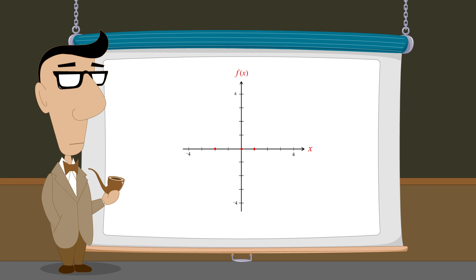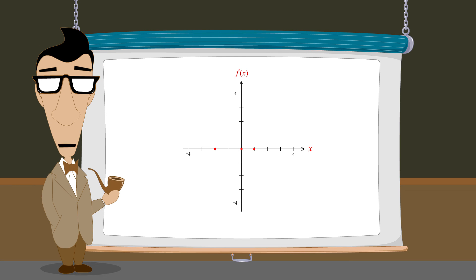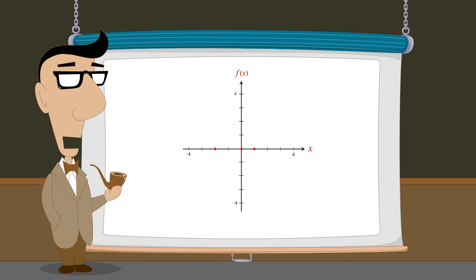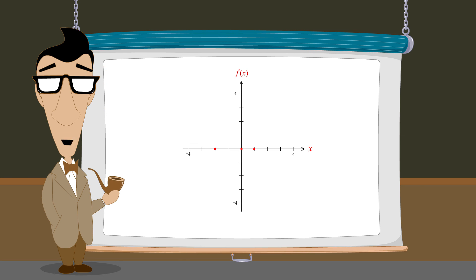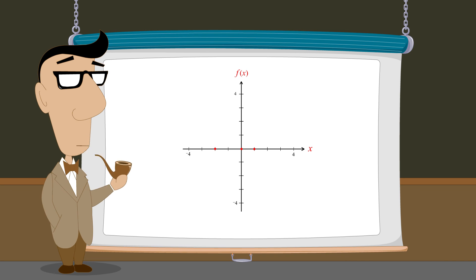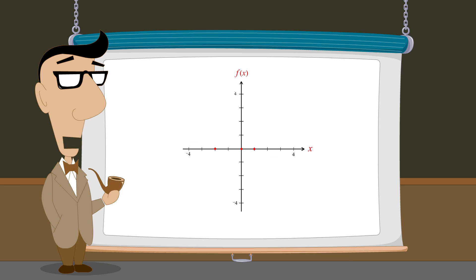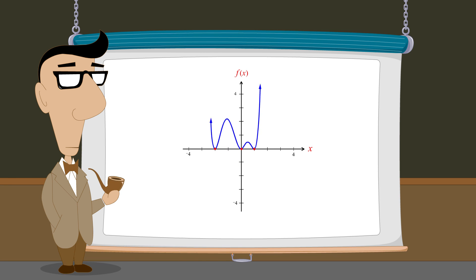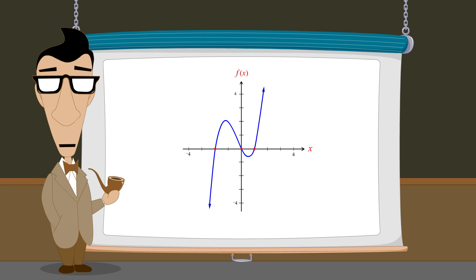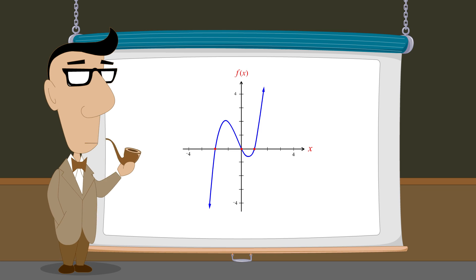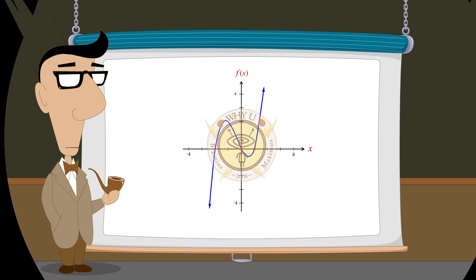Once the x-intercepts of the function's graph have been determined, we know the graph must intersect the x-axis at each of these points. Since these x-values are the function's only roots, its graph cannot intersect the x-axis anywhere else. Therefore, between each consecutive pair of intercepts the graph must lie either entirely above or entirely below the x-axis. However, there are many shapes a graph could take while intersecting the x-axis only at these points. In the next lecture we will see how to choose between these possibilities and sketch the approximate shape of the polynomial function's graph once we know its roots and x-intercepts.